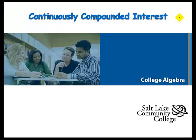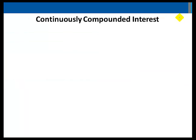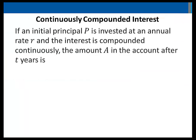This lesson covers continuously compounded interest and applications. If an initial principal P is invested at an annual rate R, and the interest is compounded continuously, the amount A in the account after T years is A of T equals P times E raised to the power RT. Thinking of the word PERT helps to remember this formula.